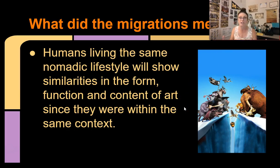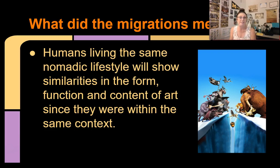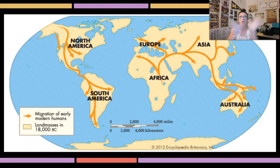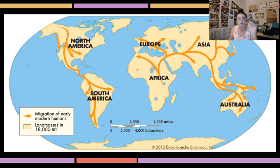We know that sculptures during this time were generally small because these were nomadic people moving from place to place. Females tended to be more important — that's primarily who is depicted during this time, though we're not 100% sure why. During this period, there was a major migration of humans out of Africa. An ice age caused water levels to drop, allowing people and animals to spread from Africa to Europe, Asia, Australia, and eventually the Americas.